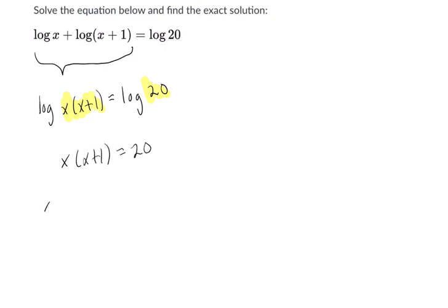All right, well, I'm going to distribute my x. x times x is x squared, times one is x. We have x squared plus x. Subtract 20 on both sides, and now I'm dealing with the quadratic.